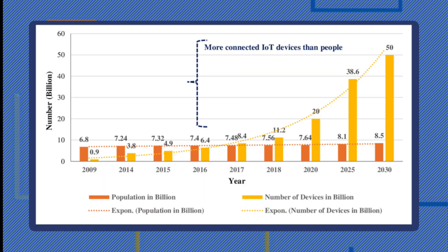And that's a problem because we have more devices than 4.3 billion connected to the Internet. We have more than 4.3 billion people — you can do the math.